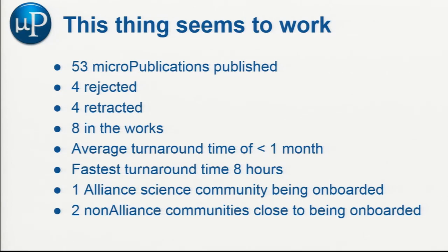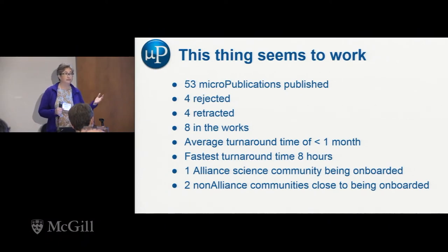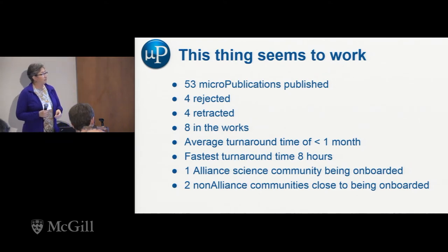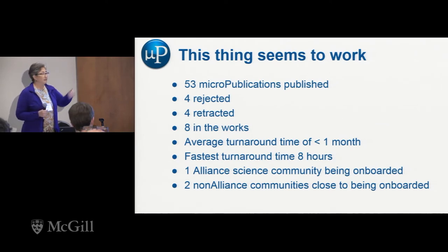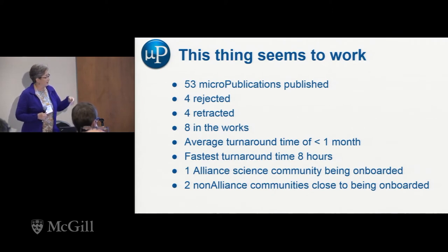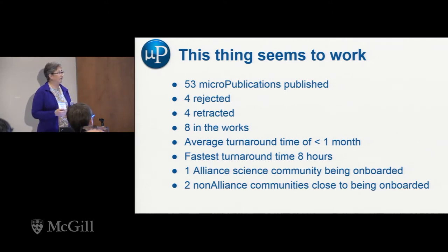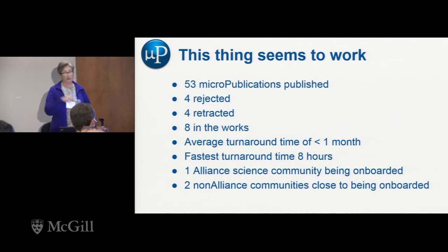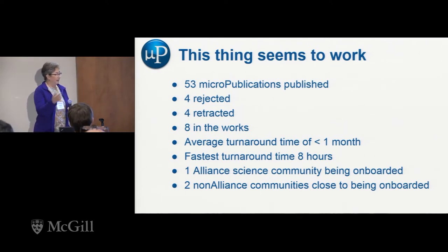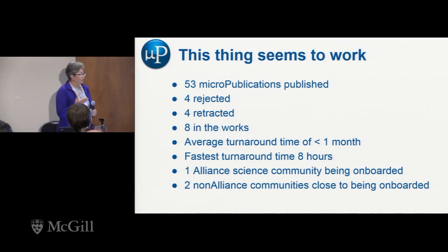What I can say right now is this is working. We've been live for a couple of years, and only the last year did we really ramp up. We have 53 micro-publications published. We don't accept absolutely everything — things do not always pass through peer review. Luckily, most of it is good data, so most of it did get published. Four are retracted, and eight are in the works. The average turnaround time is less than a month; the fastest turnaround time was eight hours — from paper out to review, back to authors, fixes made, and onto the web with a DOI.